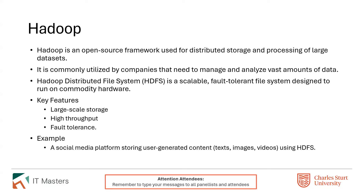The problem with striping is that if we've got four disks and one dies, we lose that portion of the data. So we'd implement a parity approach — four disks for data and one for parity — so that if we lost one disk completely we could rebuild it from the parity drive. It slows down the system, but it becomes more fault tolerant. There's always going to be a trade-off between performance, convenience, and fault tolerance. HDFS does that really well.